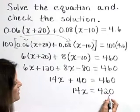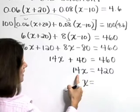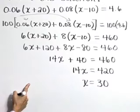As the last step, let's divide both sides by 14, giving x by itself is equal to 420 divided by 14 is 30.